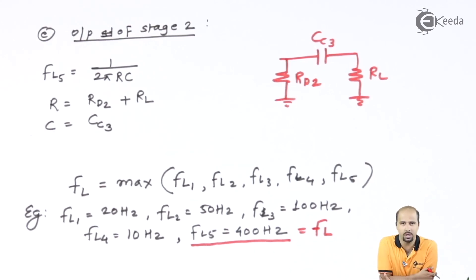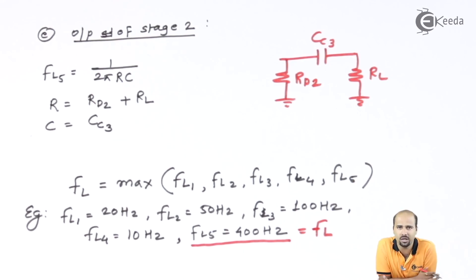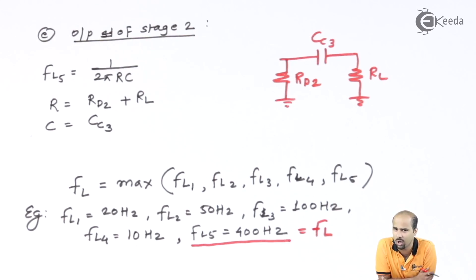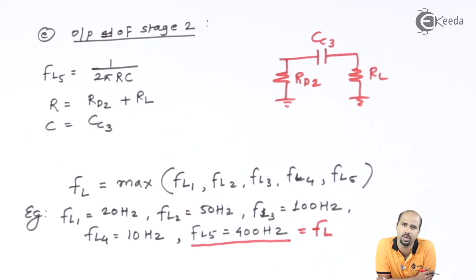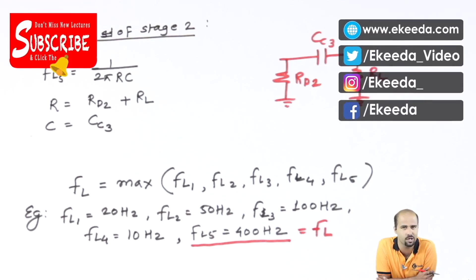So we have learned how to calculate all frequencies related to each RC circuit in the multi-stage amplifier, and how to determine the concrete lower cutoff frequency from all five values, after which we can easily draw the frequency response. In the next video, we will learn how to calculate the upper cutoff frequency for the multi-stage amplifier circuit. Thank you very much for watching.